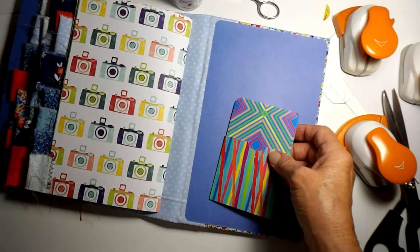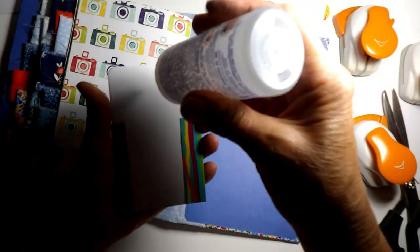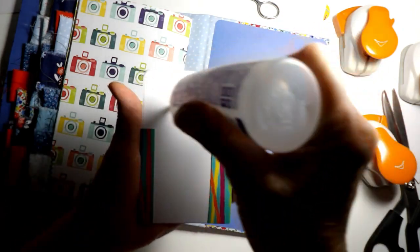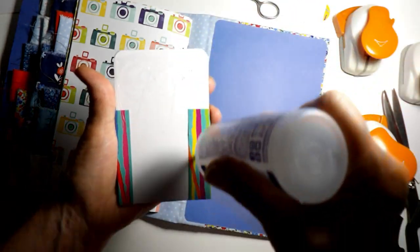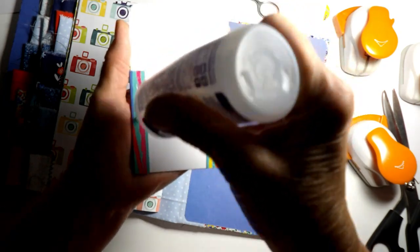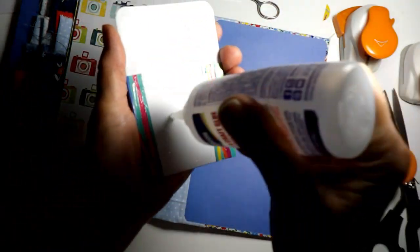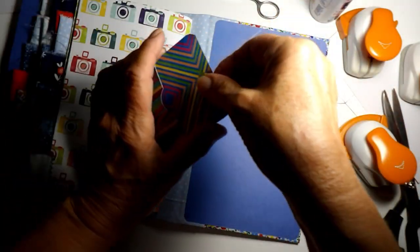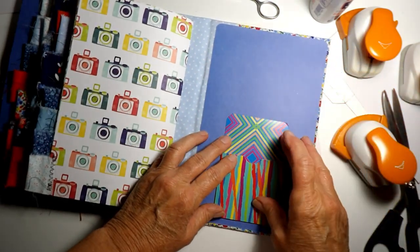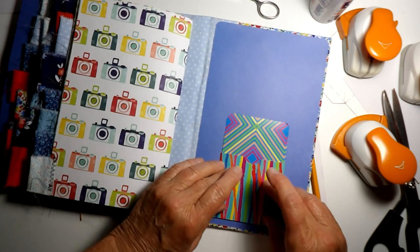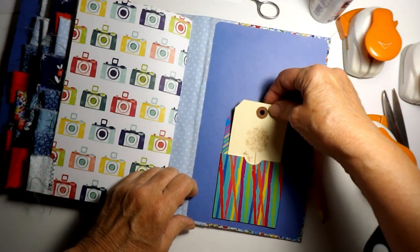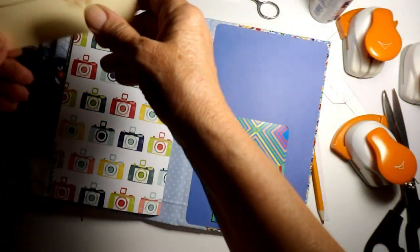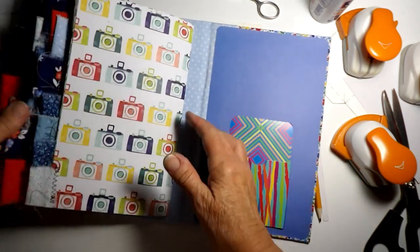And this one's going back here. Okay, and that's how I made my library card pockets. All right, and like I said we can just do that and it'll be pretty. You can put any kind of tag in there. Awesome.